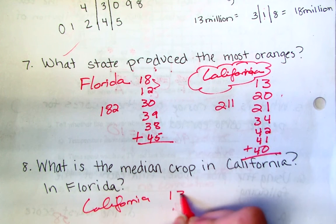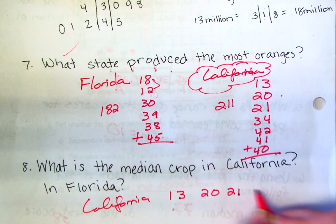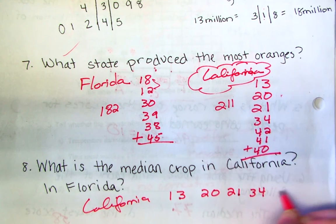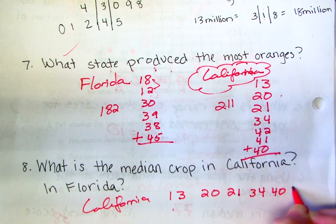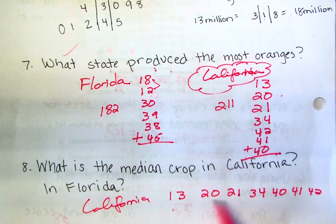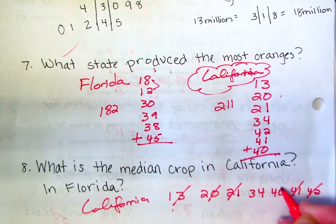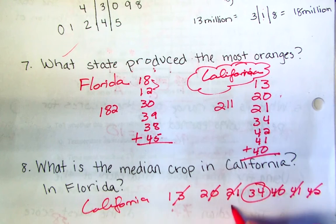13, 20, 21, 34, 40, 41, and 42. So one from the left, one from the right, one from the left, one from the right, one from the left, one from the right. So my median is 34 for California.